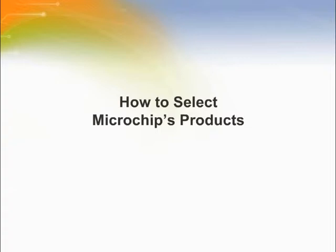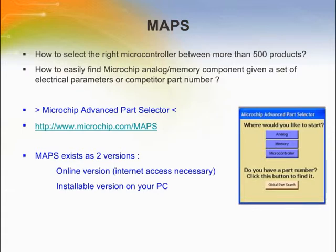As seen in Microchip's portfolio, there are a lot of parts available, which can be intimidating when selecting the right part. To help customers select the right part, Microchip has developed the Advanced Parts Selector, commonly abbreviated as MAPS. The challenge is to select one MCU from over 500 MCUs and also choose the right memory and analog products. MAPS is available at www.microchip.com/MAPS. The lead page gives you three choices: microcontroller, analog, and memory.